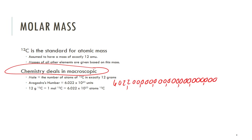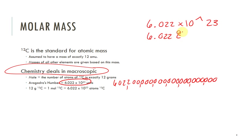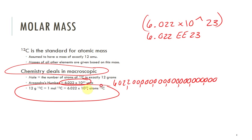It doesn't really matter to me if you want to write this out or not — I would always use scientific notation because that's easier. There are two ways to enter this number in your calculator: you can either type it in as 6.022 times 10 caret 23, or 6.022 E23, depending on your calculator. So 12 grams of carbon-12 is going to be one mole, which has 6.022 times 10 to the 23rd atoms.